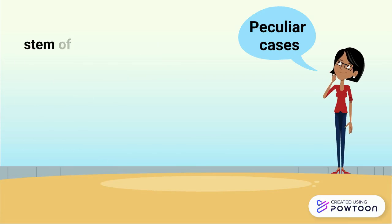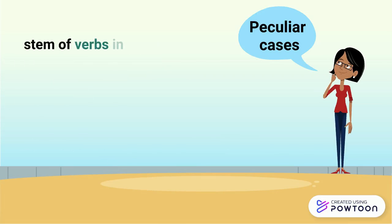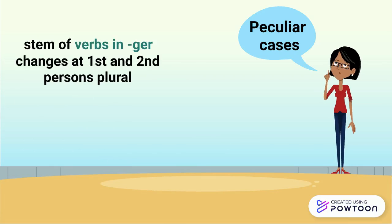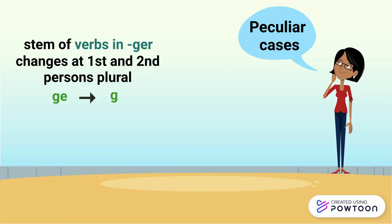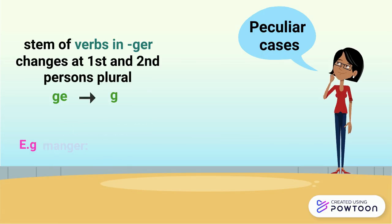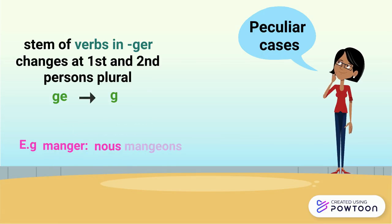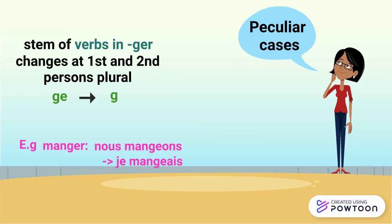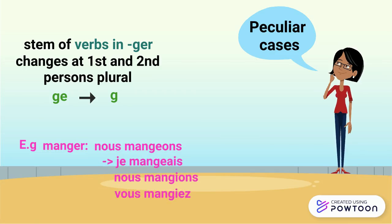The stem of verbs in -GER changes at the first and second person plural. GE becomes just G because we don't need the E to make the J sound — the I is enough. For instance, manger: nous mangeons → je mangeais, but nous mangions, vous mangiez without an E.